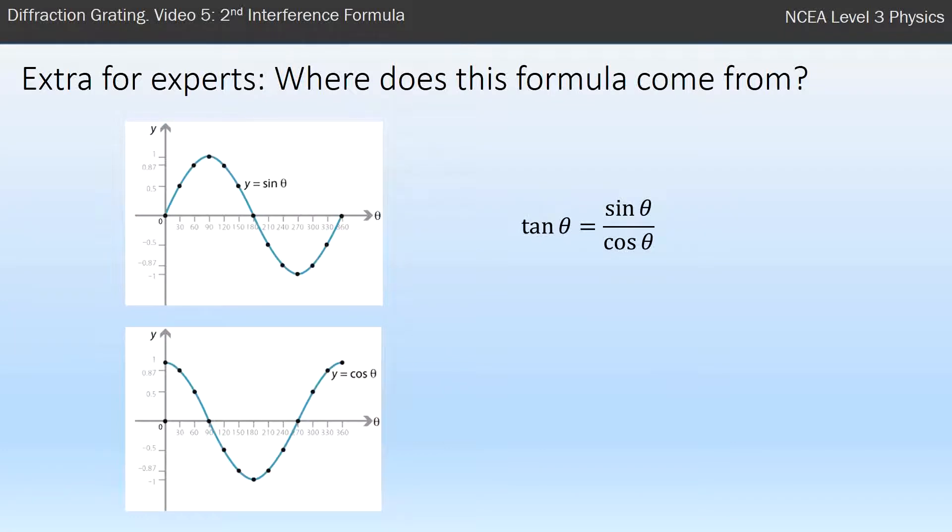What the hell is tan? So tan is sine over cos, that's the definition of tan that you hopefully learnt in maths. Our sine and cos, we've got graphs of them just to remind ourselves what they are. When we're looking at small angles, so less than 10 degrees, if you look on the cos graph, cos of an angle is very close to 1 for very small angles.